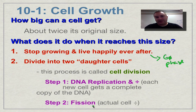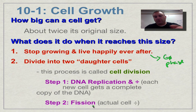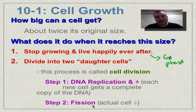The most important concept from this episode: smaller cells have a bigger surface area to volume ratio, which gives them a great advantage in moving materials in and out of the cell. We'll catch you on the flip side.